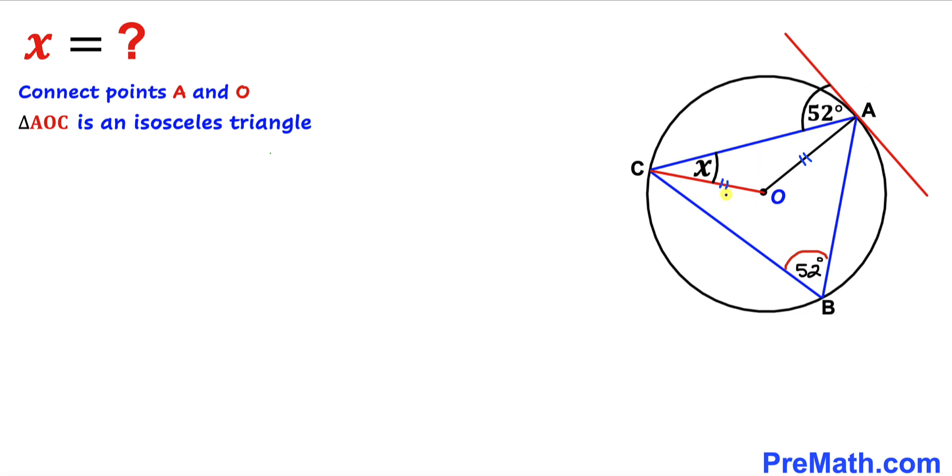Now we can see since these two sides are equal, therefore these angles are going to be congruent as well. If this angle is x, this angle is going to be x as well.